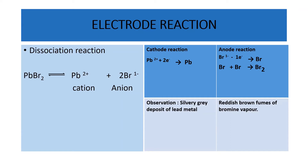In your exam they can ask: write the cathode reaction and state your observation. The observation at the cathode is a silvery gray deposit of lead metal. The words 'silvery gray' are a very important keyword here. Similarly, the observation at the anode is reddish brown fumes of bromine vapor. The words 'reddish brown fume' are a keyword here.